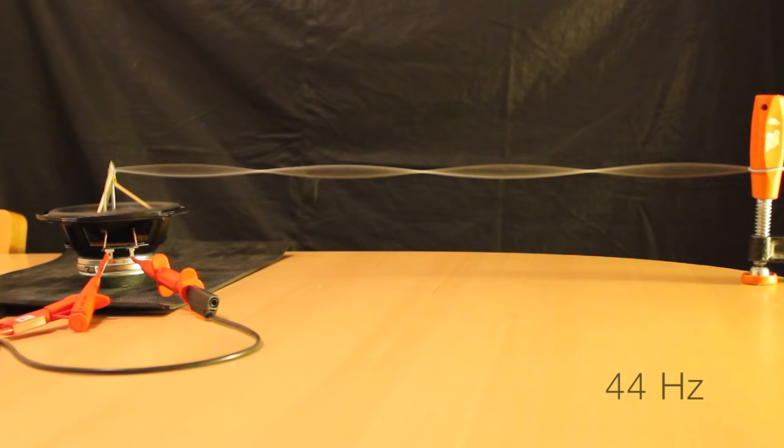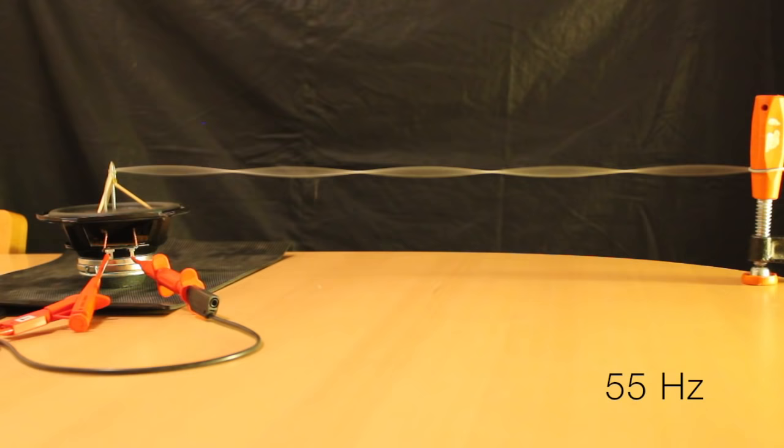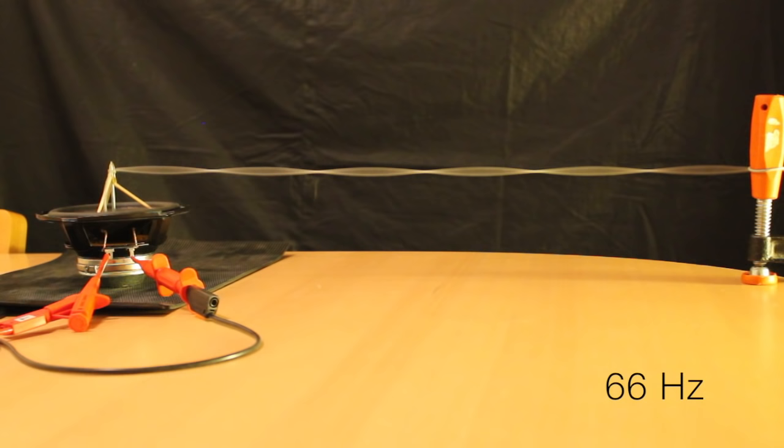So this will keep happening as I go up in frequency. This is 44 Hz. If I multiply the original by 5, I get 55 Hz. And of course you can see it's the same behavior as I keep going up and up and up. We can zoom in on this and we'll see that in fact the string really isn't moving.